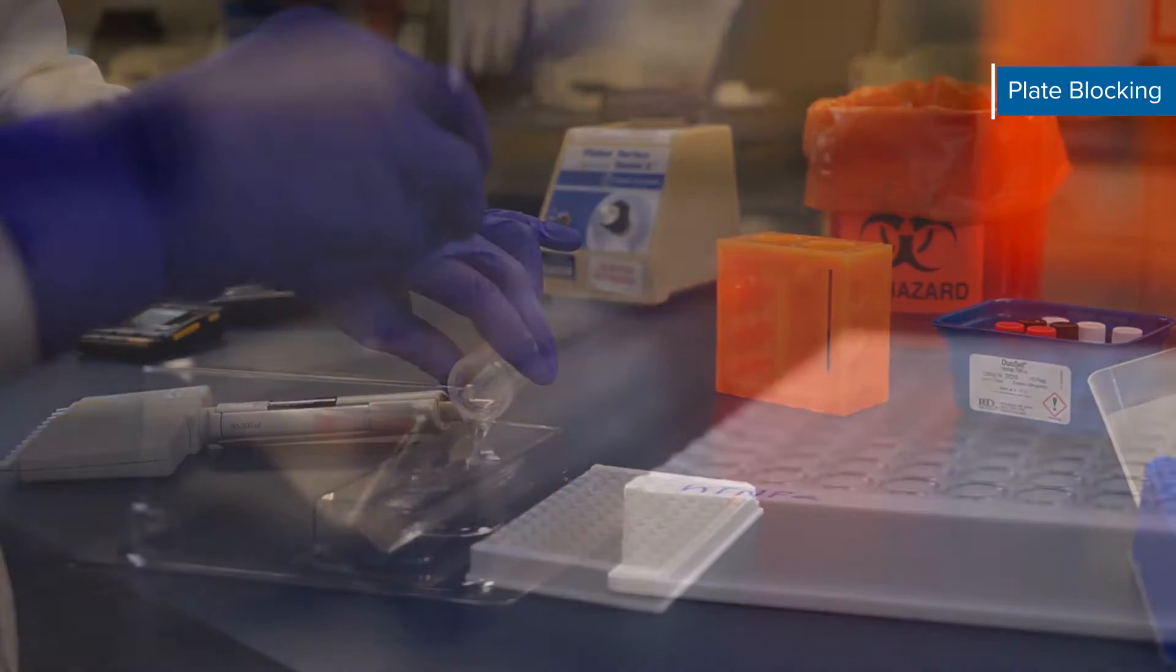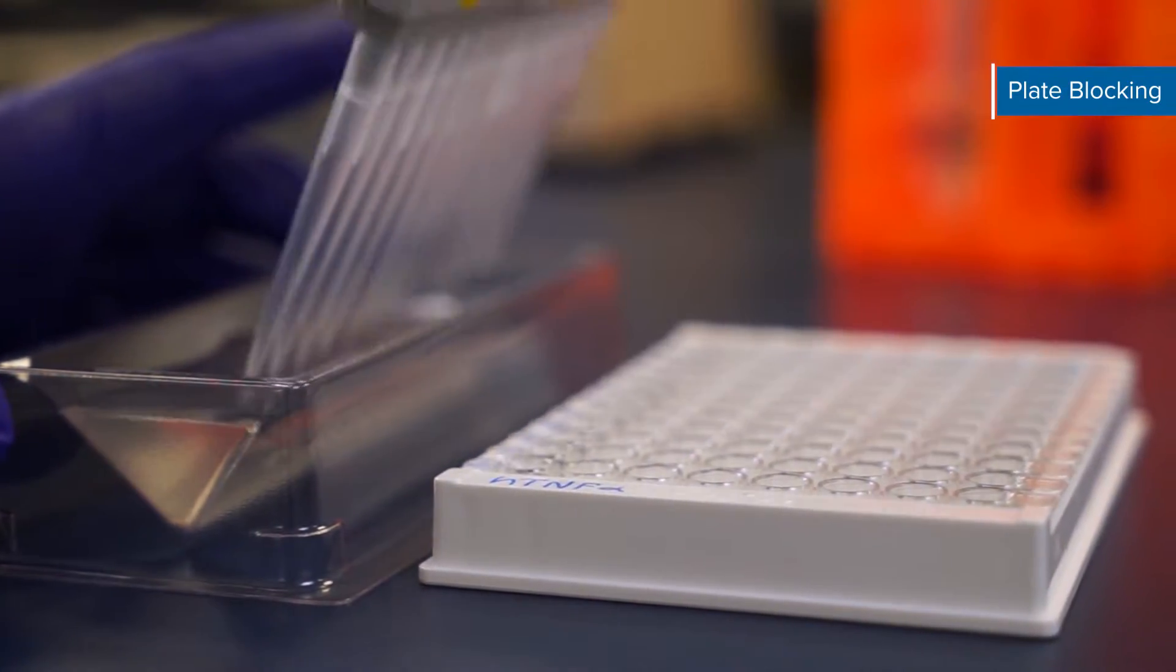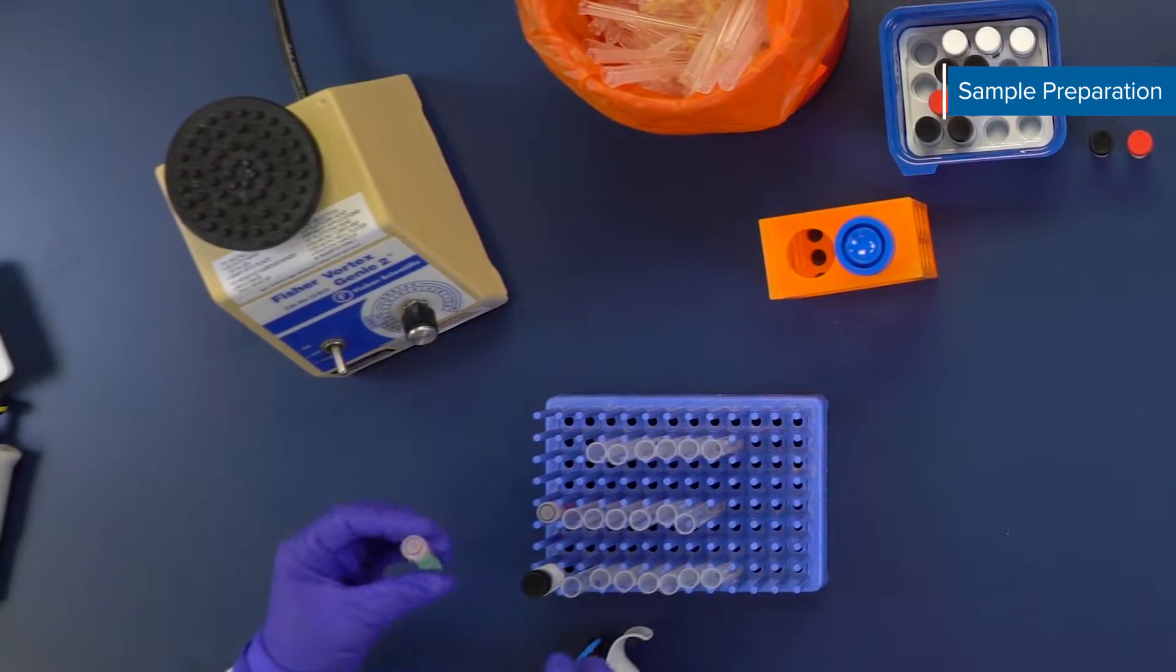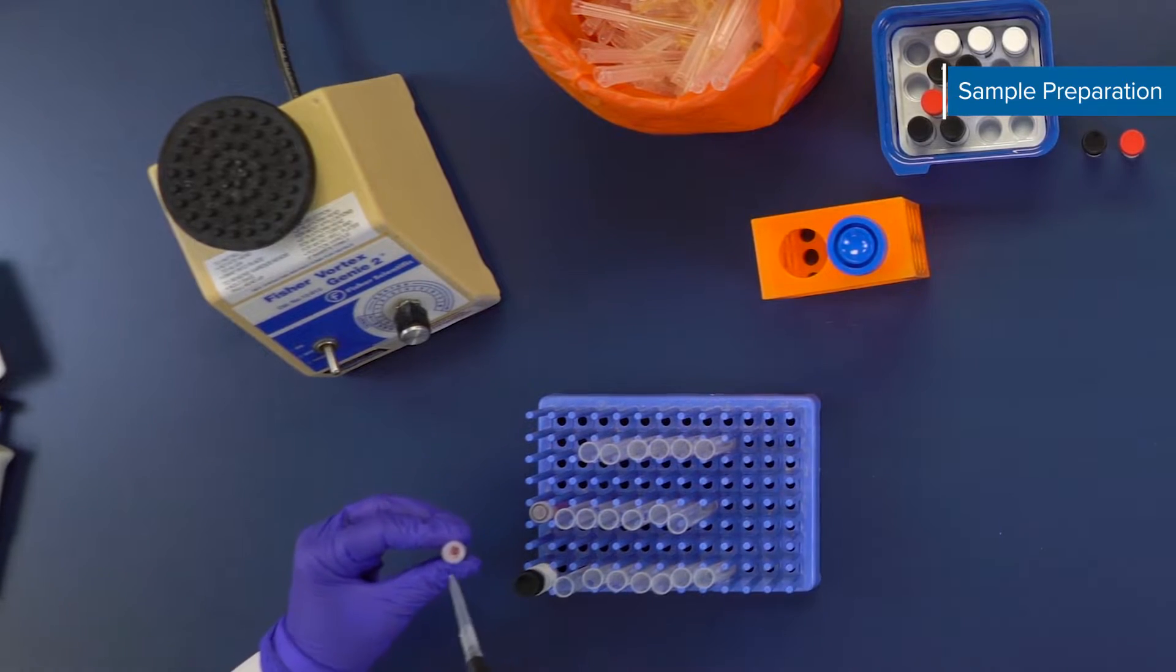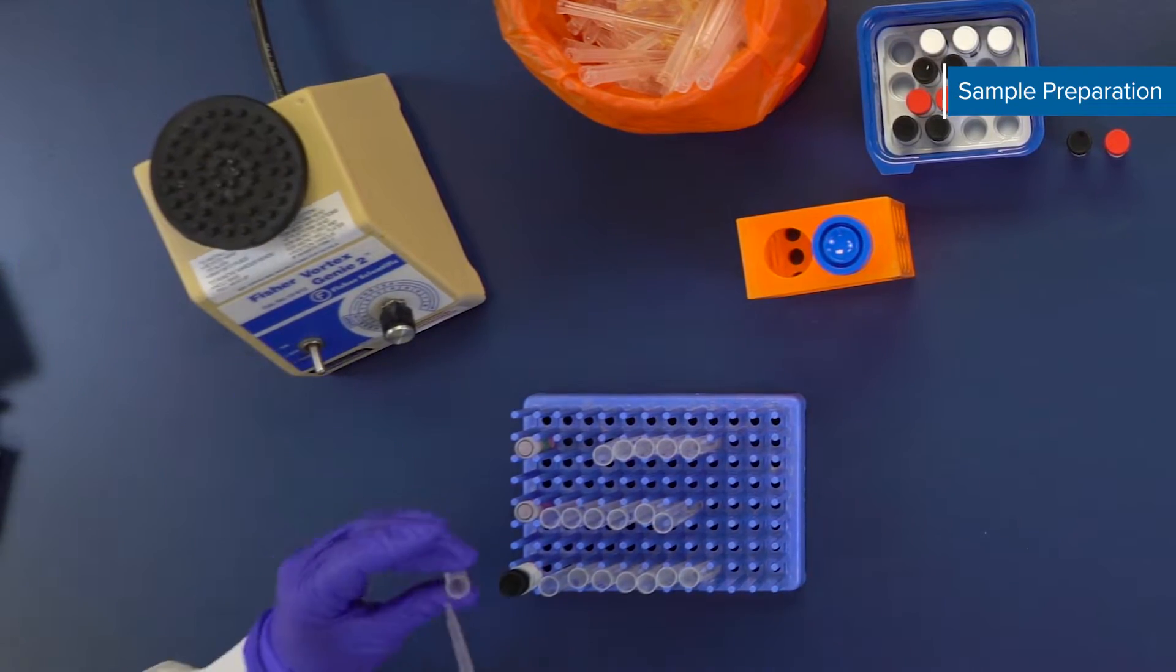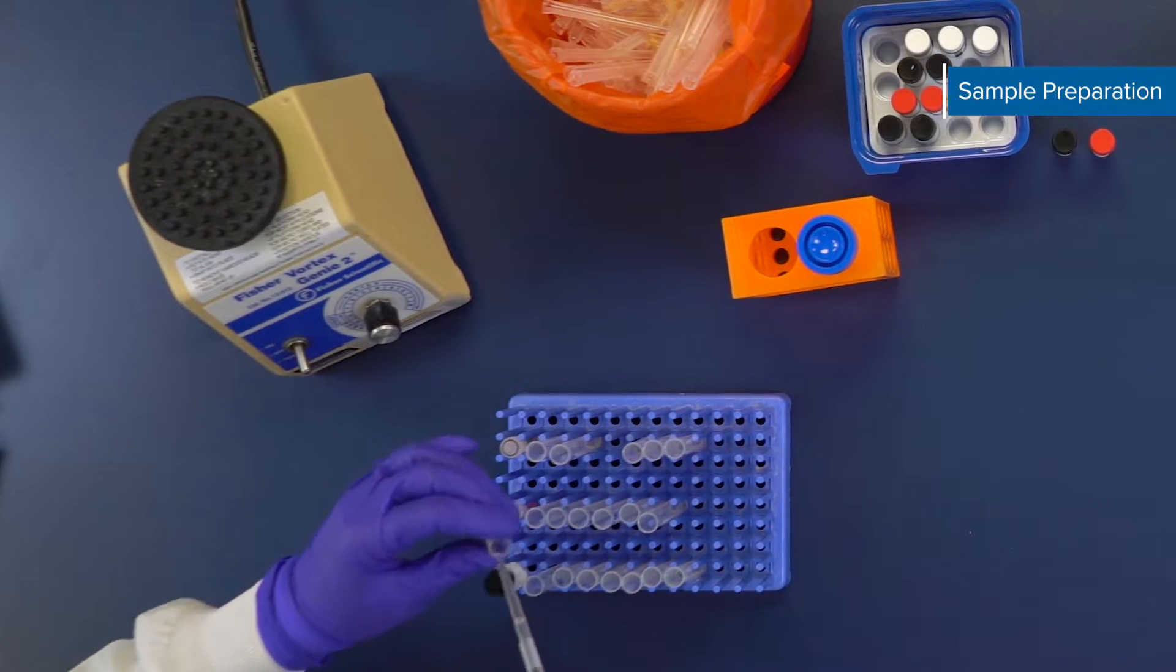Next block the coated plate by adding 300 microliters of reagent diluent to each well. Incubate at room temperature for a minimum of one hour. During this incubation prepare your samples for testing. Samples may be diluted in reagent diluent and should have volume sufficient to add 100 microliters to each well. It is recommended that all samples are assayed in duplicate.